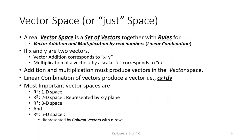A vector space is a set of vectors together with rules for vector addition and multiplication of a vector by real numbers. The keywords are the set of vectors and two rules: vector addition and multiplication of a vector by a real number. Together these two rules are known as linear combination. If we have two vectors x and y, vector addition corresponds to x plus y, and multiplication of vector x by scalar c corresponds to cx. These operations always produce a vector in the same vector space.